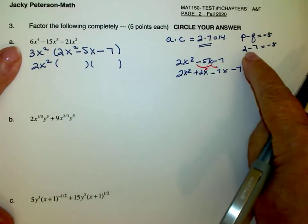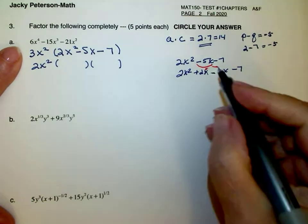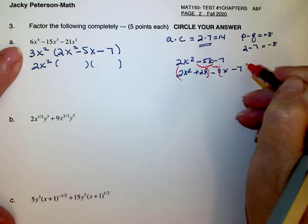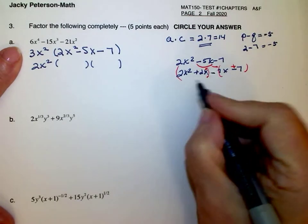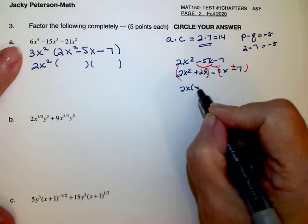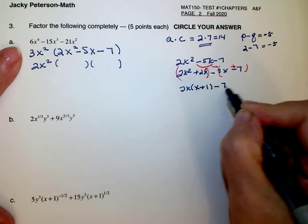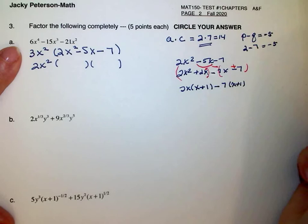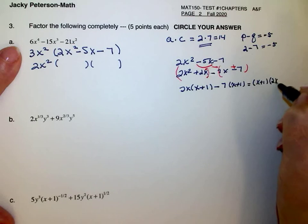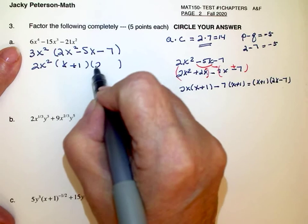So now I factor by grouping, group the first two, last two. That becomes 2x times x plus 1 minus 7 times x plus 1. So this is going to turn into x plus 1 times 2x minus 7. So that's just one of many ways that you can do this particular problem.